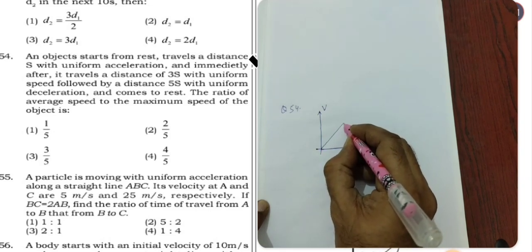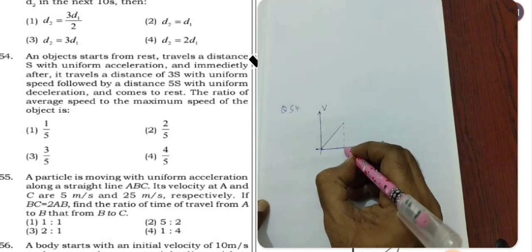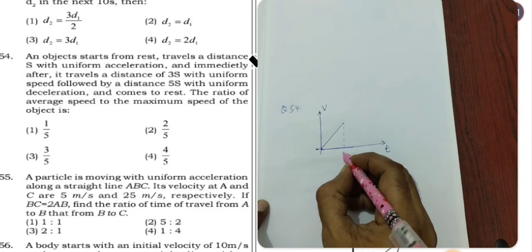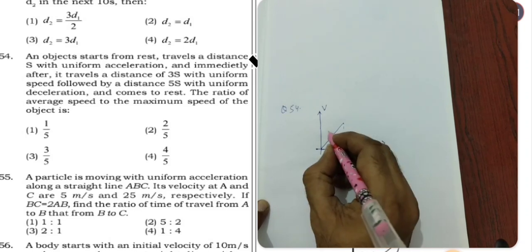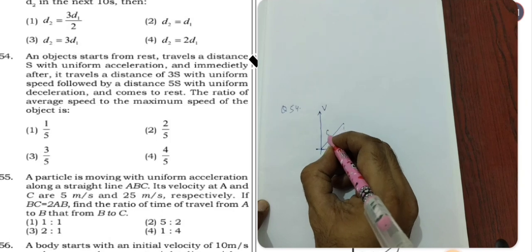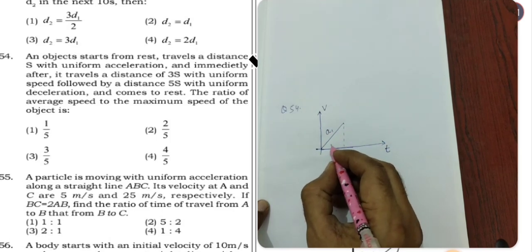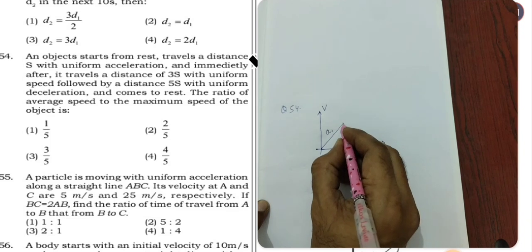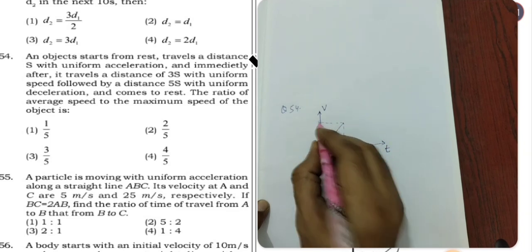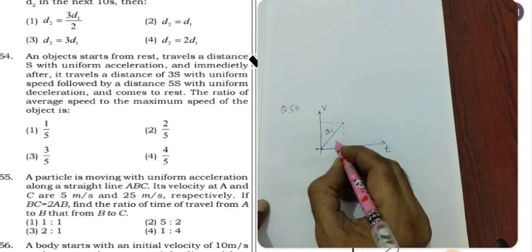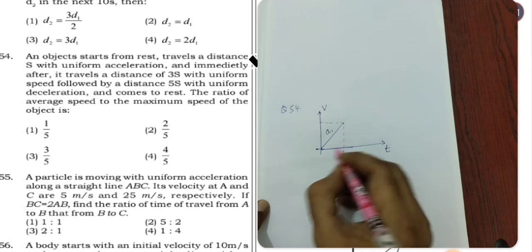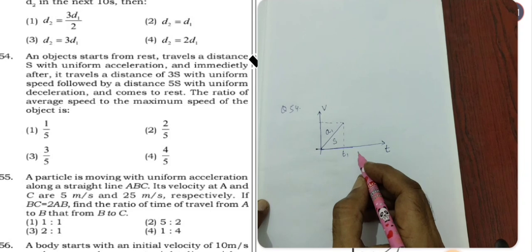The object starts from rest. After this acceleration, constant acceleration A1, the velocity is coming up. And this area, this triangular area, represents the distance S according to the question.